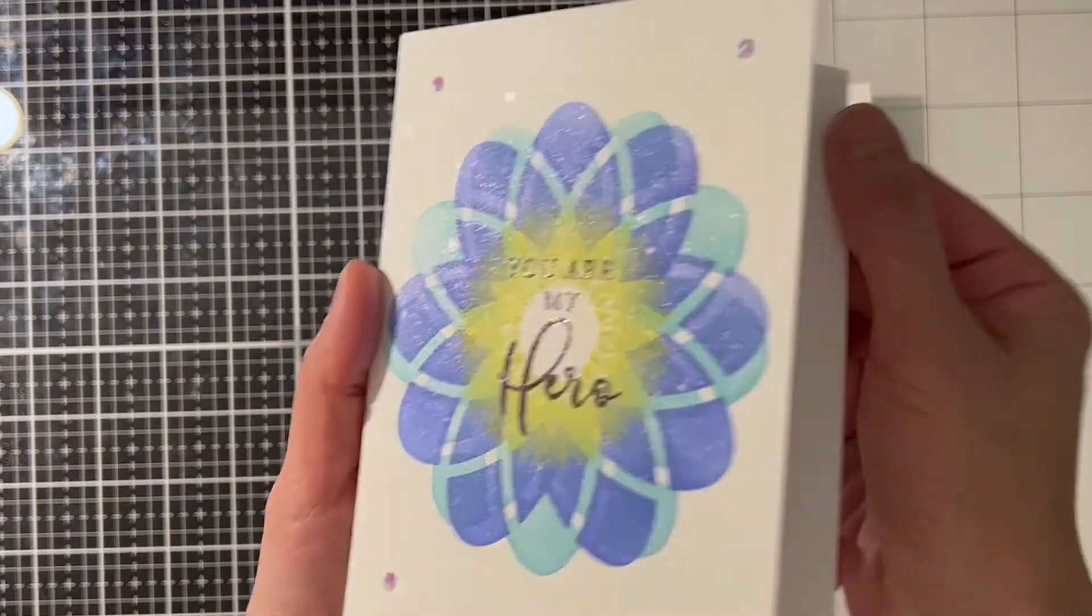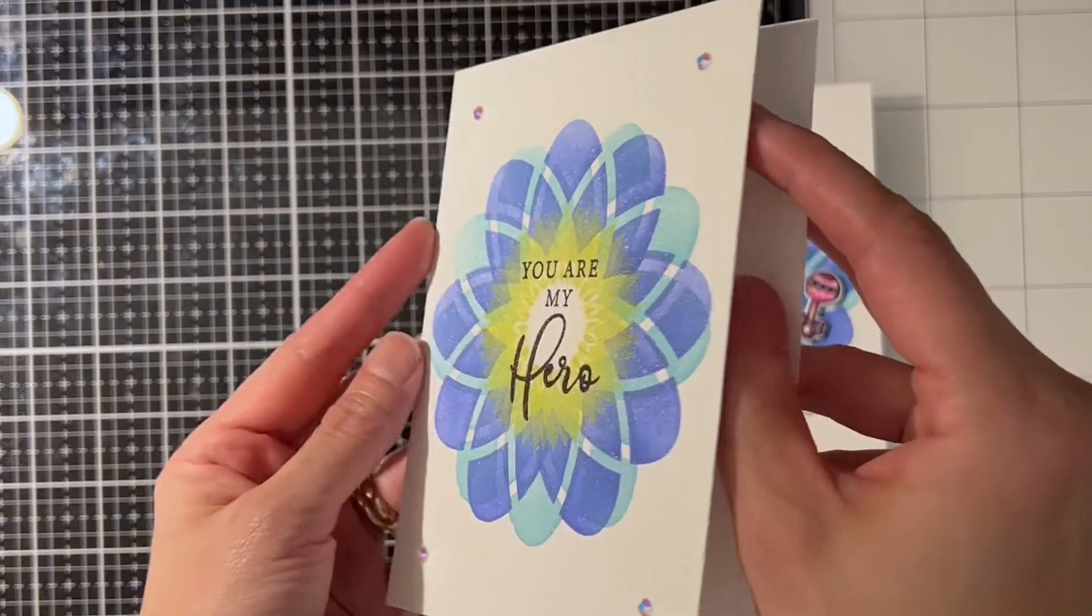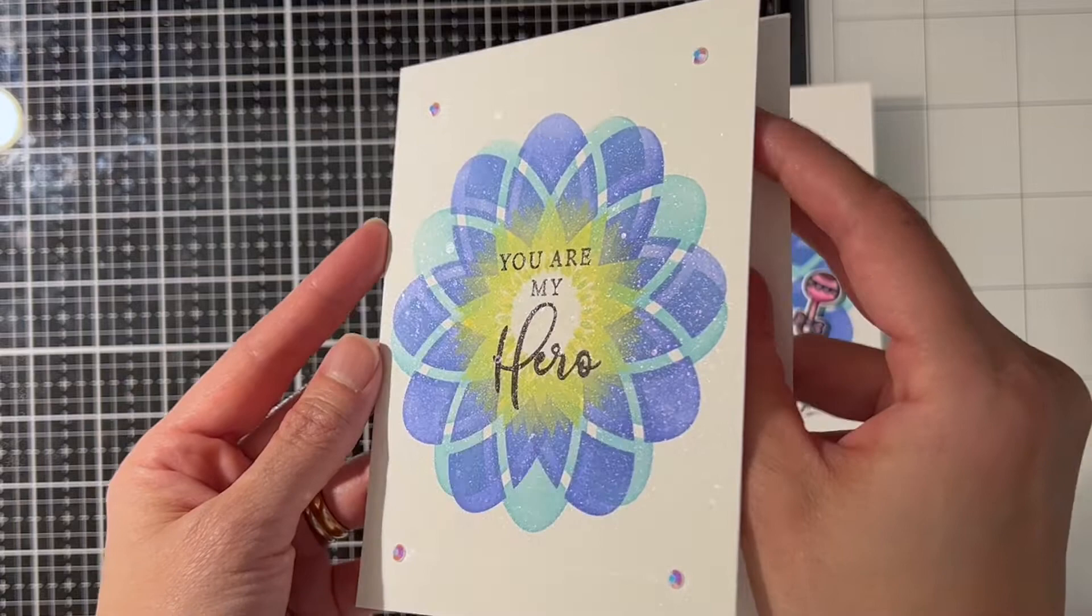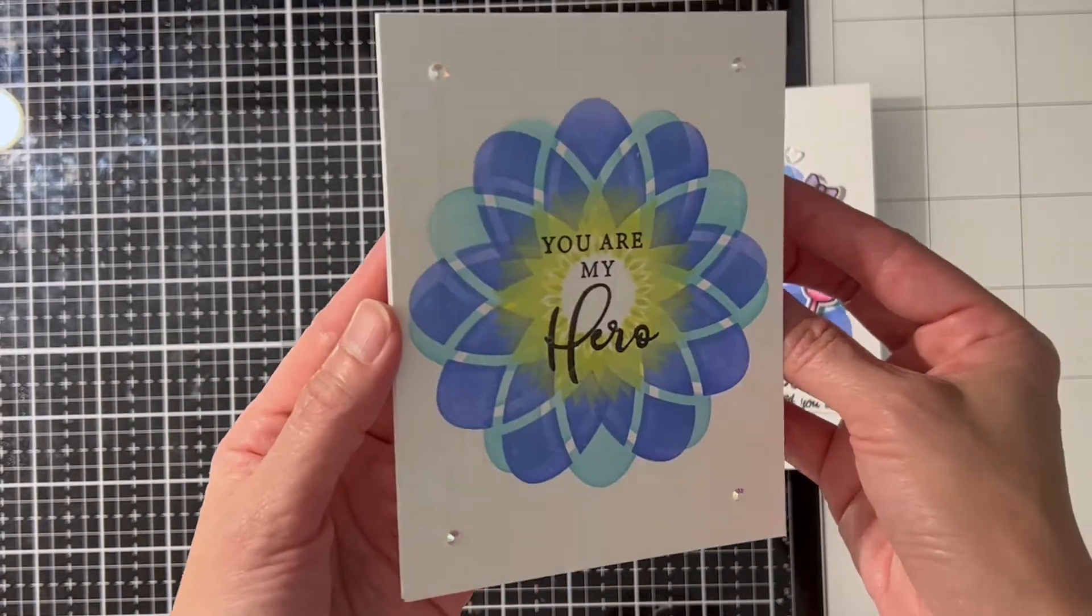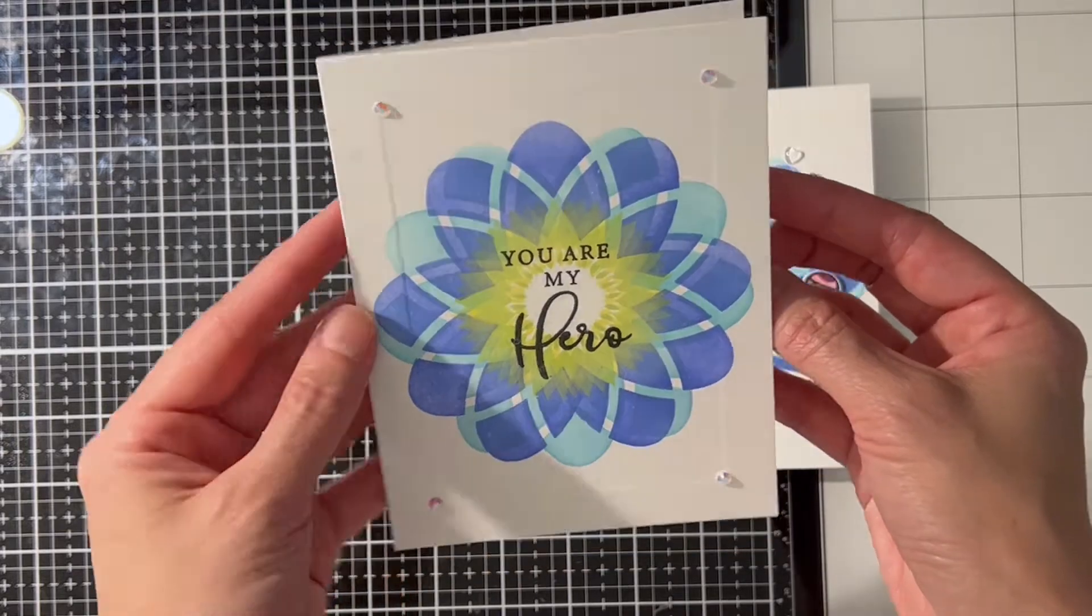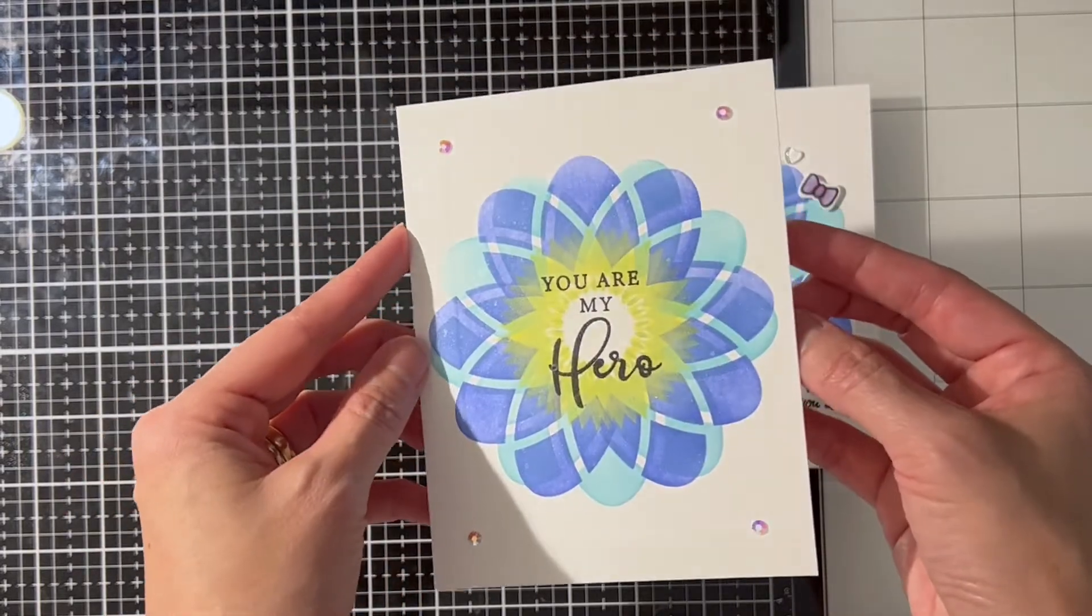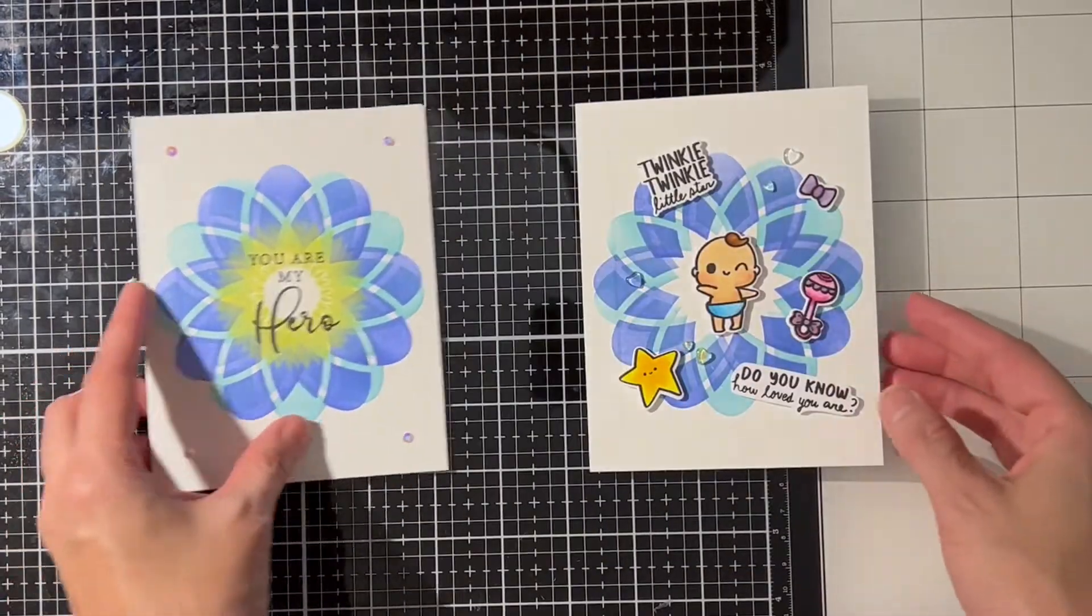As you can see, my A2 panel has a subtle raised panel border. I added four gems on the corners, which I think accentuates the raised border and create more of a focal point to the center. I also added some heart-shaped clear gems to complete my auto card.